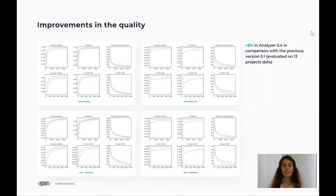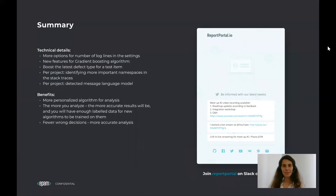We have quality improvements of plus 6% on average in comparison with the previous version, and metric blocks for some projects are shown here. To sum up: we've added more options for number of log lines in settings, and new features for the gradient boosting algorithm — we boost the latest defect type for a test item and add per-project features such as identifying more important namespaces in stack traces and training a defect message language model. You now have a more personalized algorithm for analysis, which makes fewer wrong decisions and gives you more accurate results. I hope you will like our changes, and if you have any questions, please comment here or ask in the Slack channel. Thank you for your attention and take care.